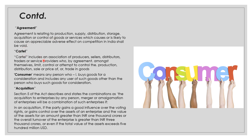'Cartel' is an association of producers, sellers, distributors, traders or service providers who by agreement amongst themselves limit, control or attempt to control the production, distribution, sale or price of trade in goods. Nobody is supposed to limit or control production, distribution, sale or price of goods and services. So if these producers, sellers, distributors, etc. form an association for that purpose, then it is called a cartel, which is prohibited.